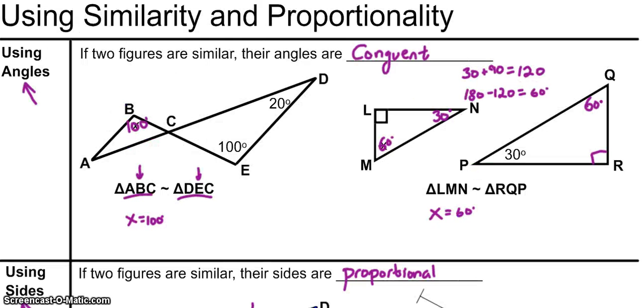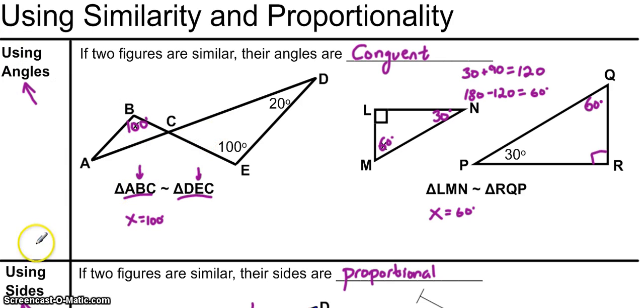I hope you've learned something about using similarity and proportionality to solve geometric problems. Remember, using angles is pretty straightforward — they're all congruent — but when it comes to sides, they're always proportional.